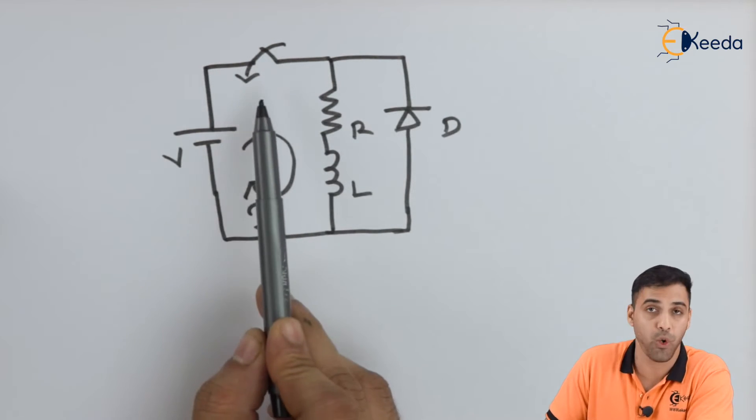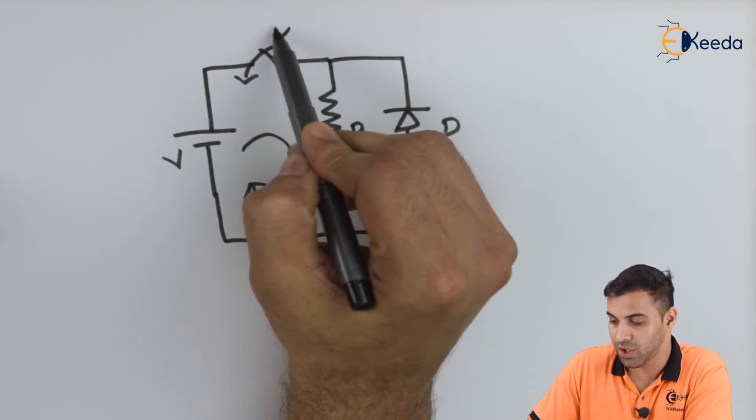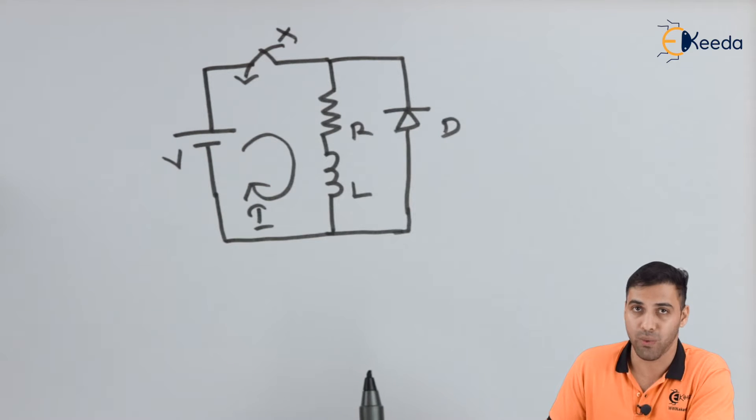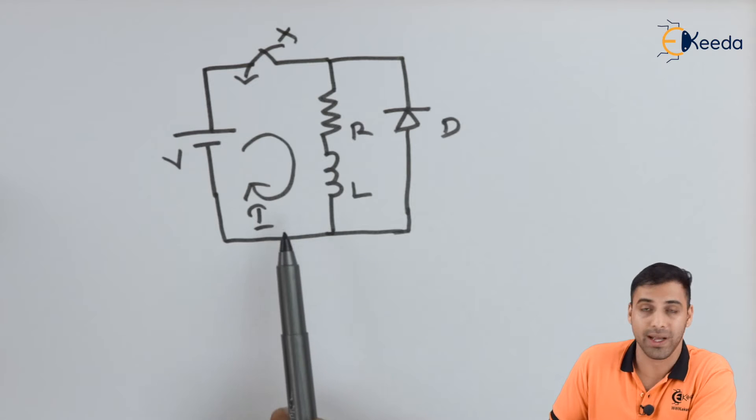That means I keep this switch open. So after the inductor gets charged, let me switch this off. Now what happens is, this becomes an open circuit. The flow of electric current stops.